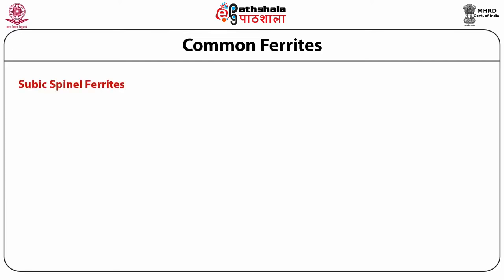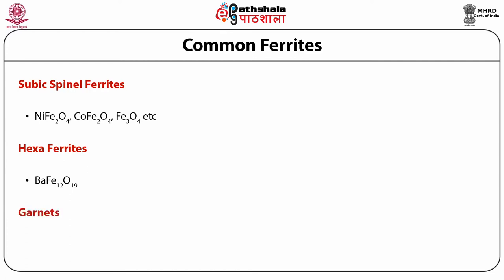There are three important categories of magnetic ferrites. First is cubic spinel ferrites — for example, NiFe2O4, CoFe2O4, and Fe3O4. Second is hexagonal ferrites — for example, BaFe12O19. Third are the garnets — for example, R3Fe5O12.